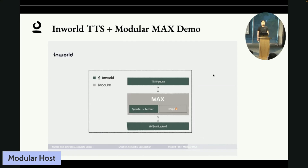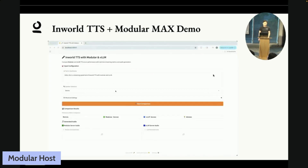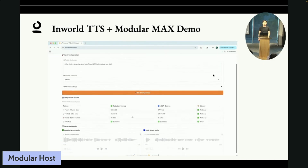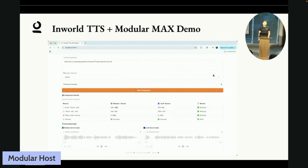Mojo serves as the foundational layer for writing kernels and graph transformations within Max, making the entire stack programmable and portable without sacrificing efficiency. Now we are conducting a live inference speed comparison between Modular and VLLM to benchmark their performance for accelerating the InWorld TTS model. The tool sends identical streaming speech synthesis requests to servers running each engine, using the same text and speaker to compare their respective latency metrics. Modular demonstrated superior performance over VLLM across all key latency metrics, including lower first chunk latency, lower end-to-end latency, and real-time factor, especially for longer sentences.